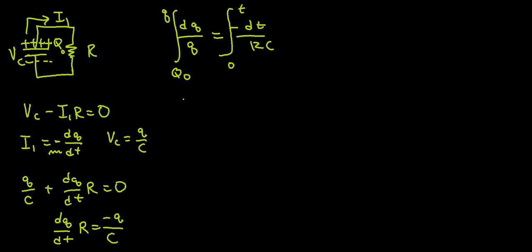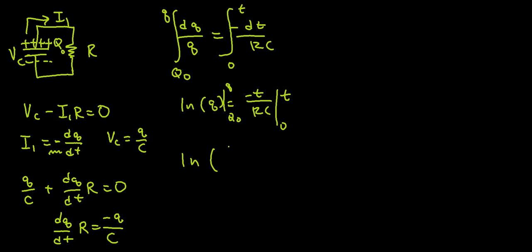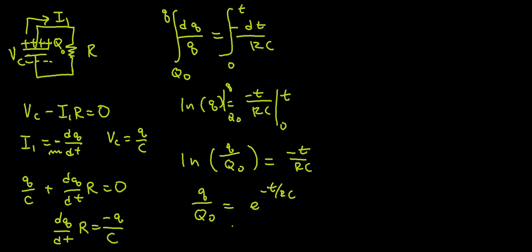Integrating, I have ln of Q evaluated from Q naught to Q equals negative t over RC. Solving, I get ln of (Q over Q naught) equals negative t over RC. Raising both sides to the natural exponent, Q over Q naught equals e to the negative t over RC. So I can rewrite this as Q equals Q naught e to the negative t over RC.